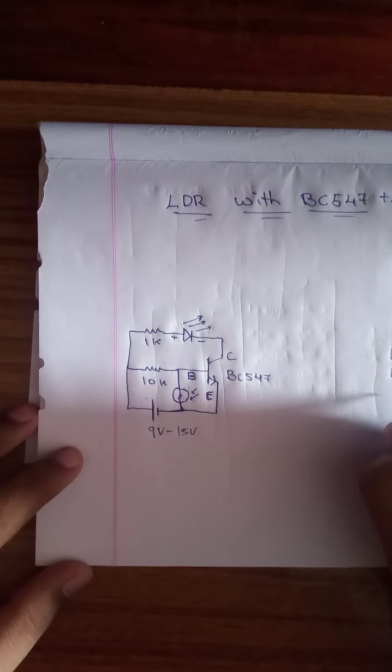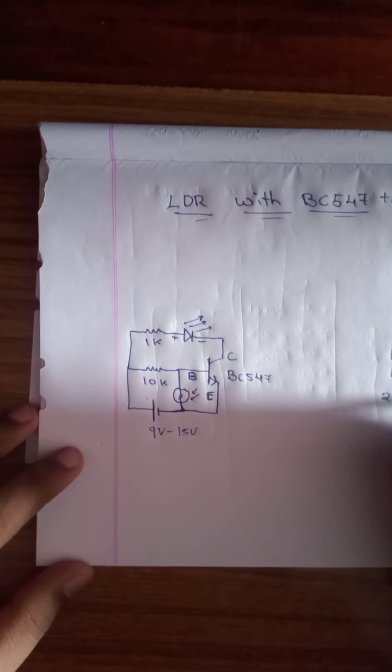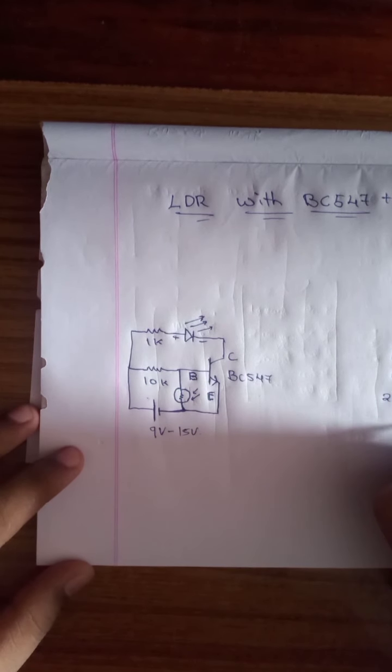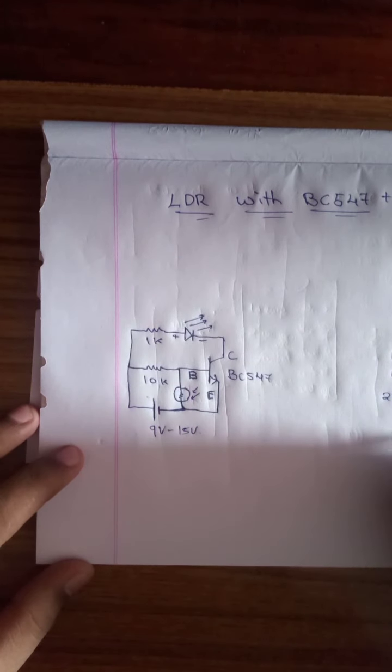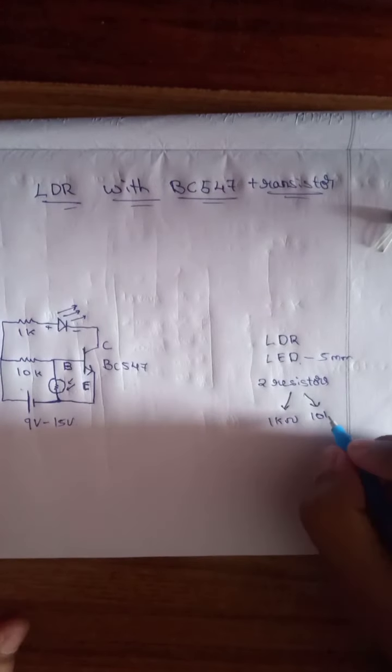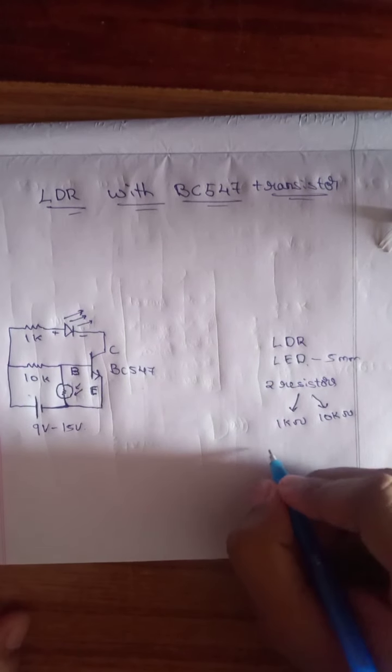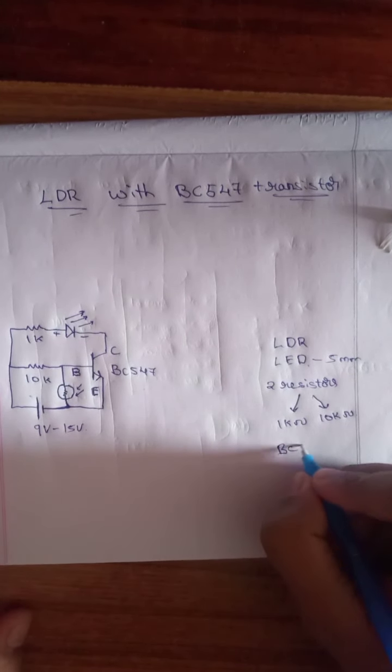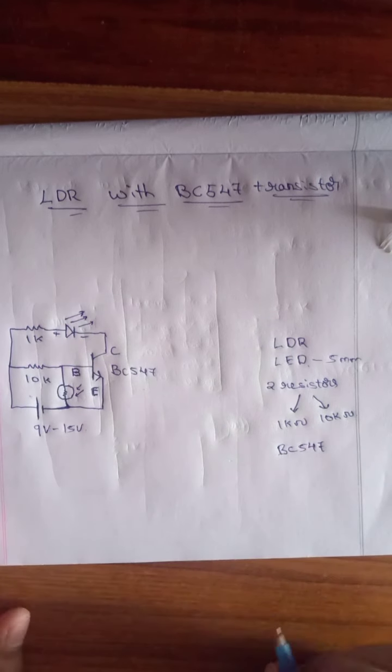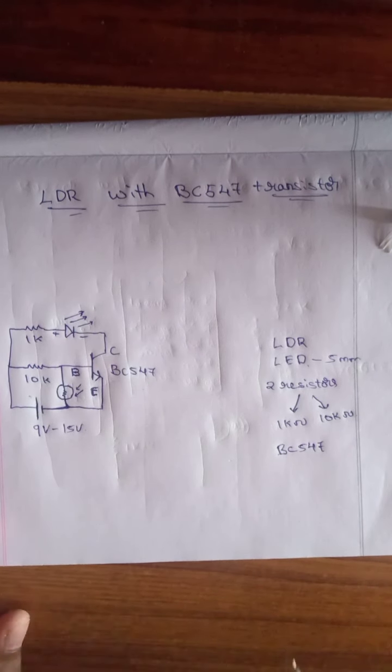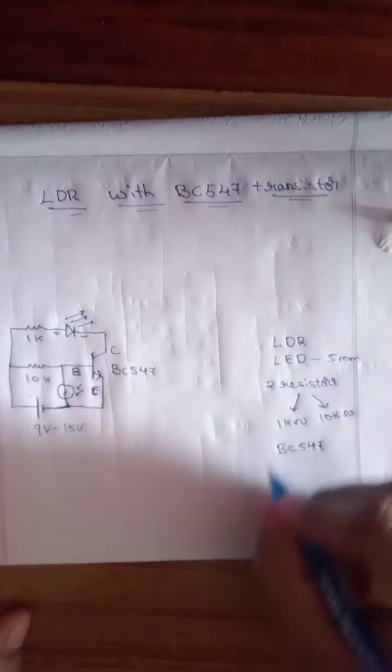Two resistors, each 1K ohm and 10K ohm. A transistor BC547 as I said before. These are the required components.